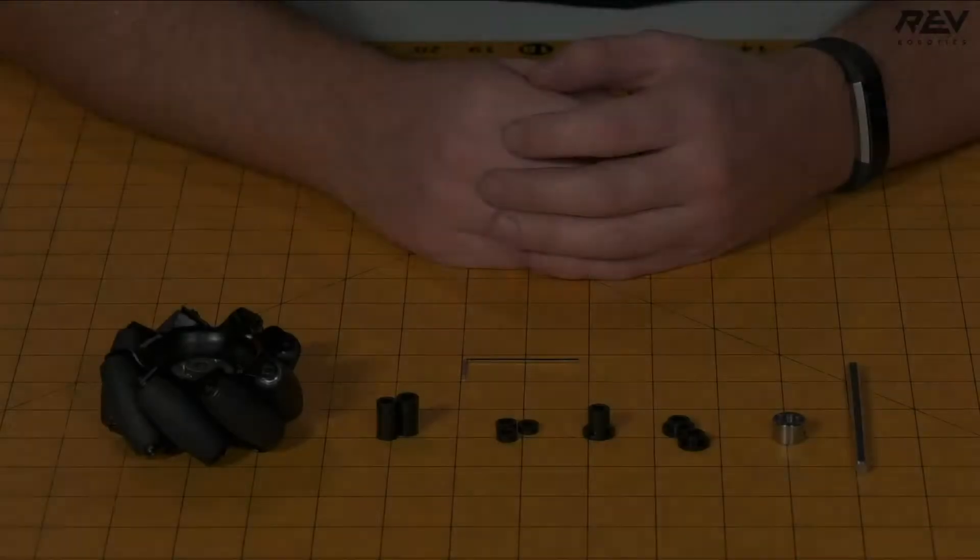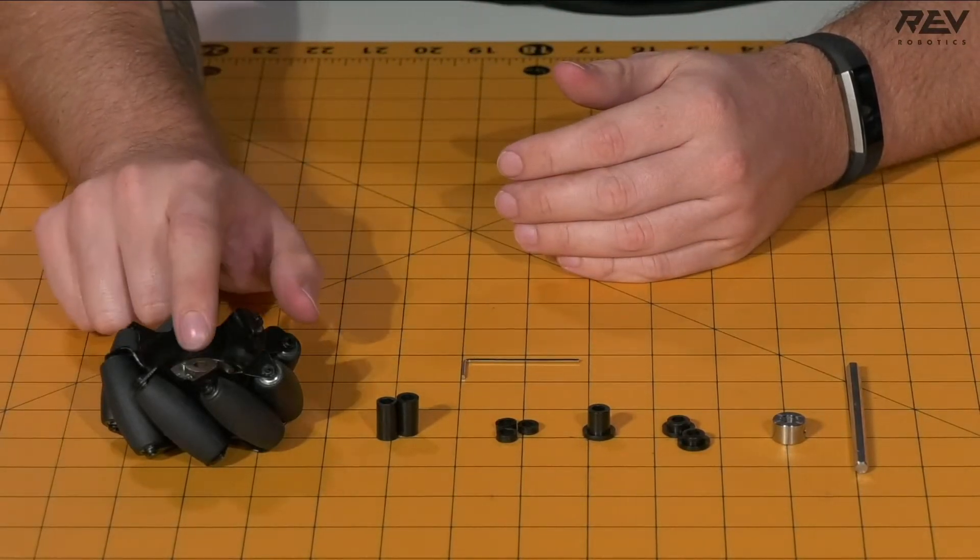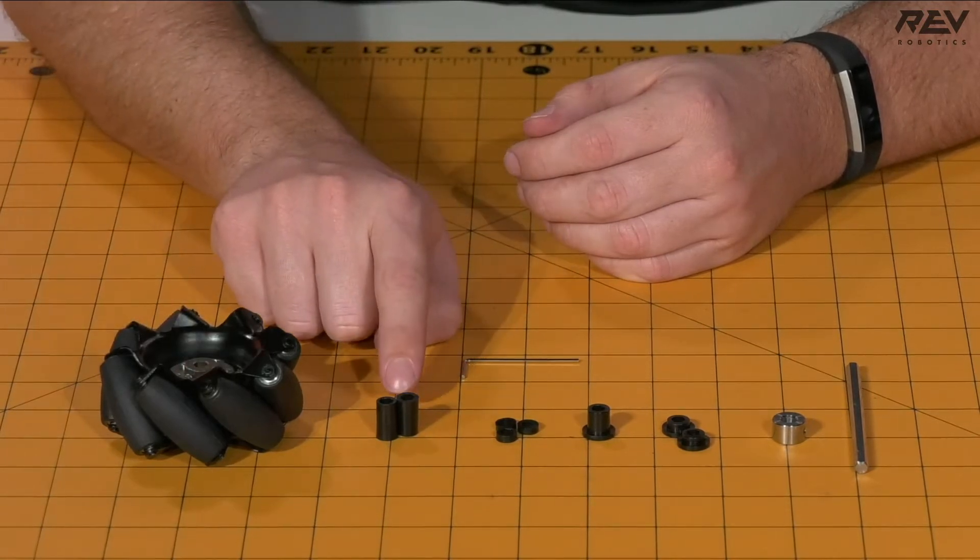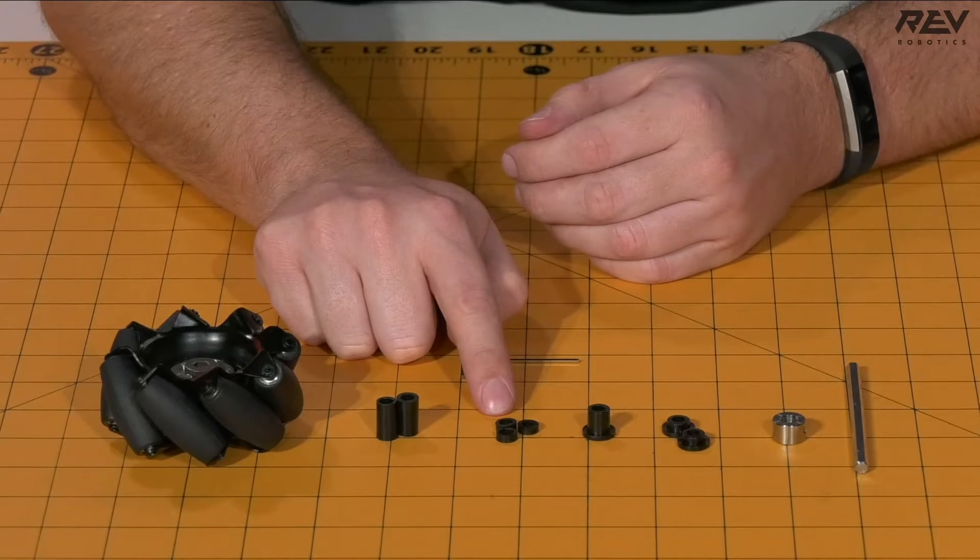We are building the drive shaft assembly. For this assembly you'll need a mecanum wheel with the universal hex adapter pre-installed, two 15mm spacers, and three 3mm spacers.